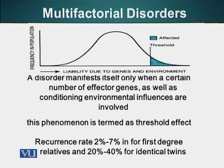The recurrence rate for first-degree relatives — meaning those who share 50% of our genes, like parents, siblings, or children — is 2% to 7%. In Mendelian genetics, even recessive disorders give siblings a 25% recurrence chance. But in multifactorial disorders it is only 2% to 7%, because genetics plays a smaller role compared to environmental factors.